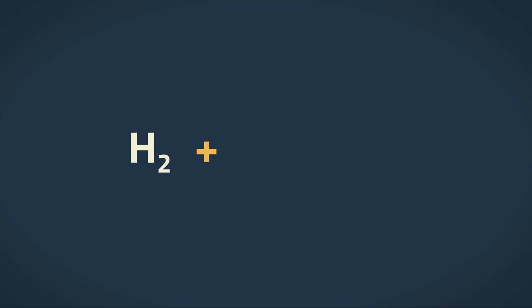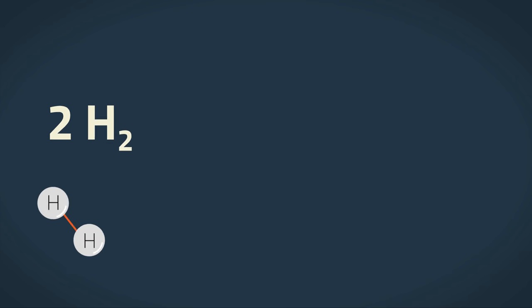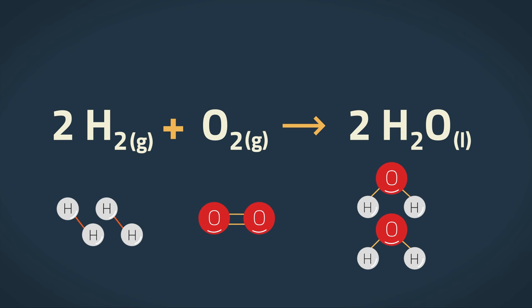Hydrogen gas reacts with oxygen to produce water. As hydrogen and oxygen are diatomic gases, we must also represent that in the equation. Balancing the equation gives us this. Adding the state symbols completes the equation.